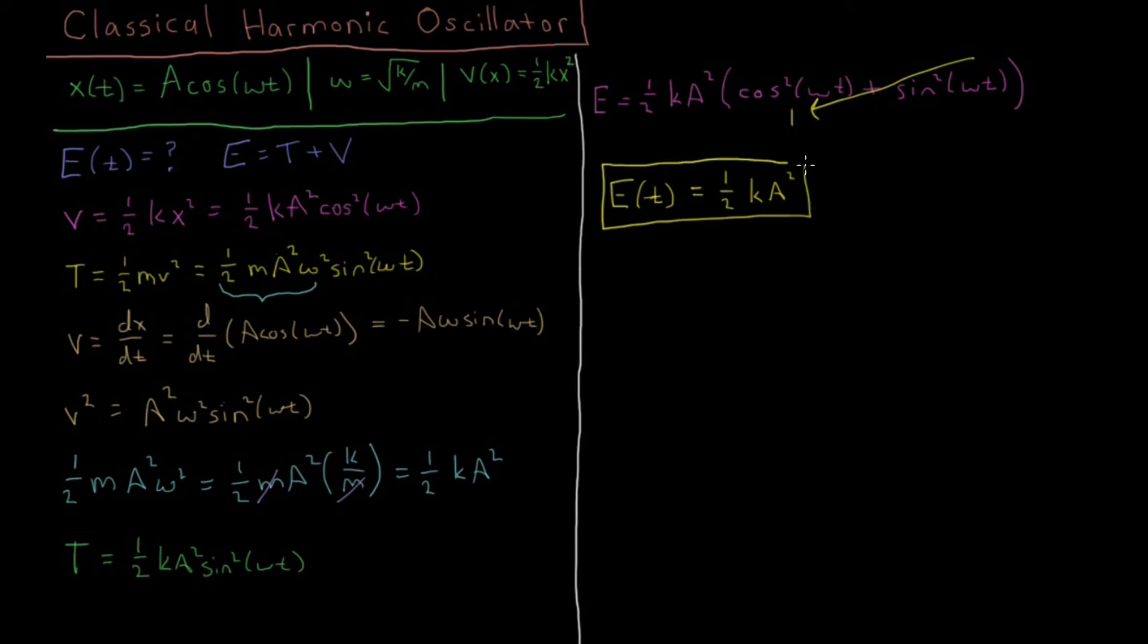So what does our total energy of a harmonic oscillator depend on? It depends on this k, which is how stiff this quadratic potential is that our particle lives inside, and this A², the square of the initial displacement at which we put the particle before we let go, because we put it at some initial displacement A and gave it zero momentum to start.